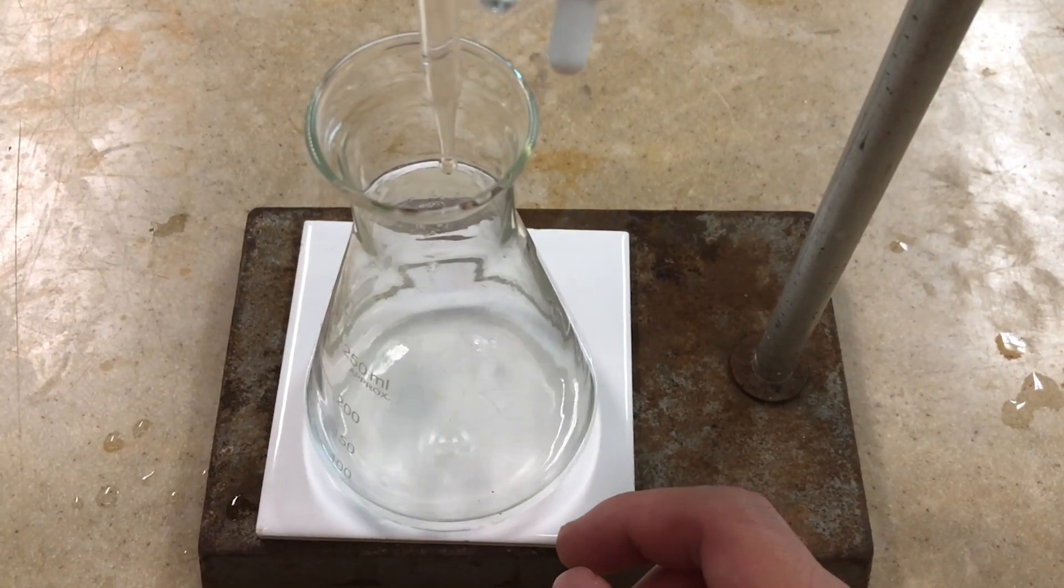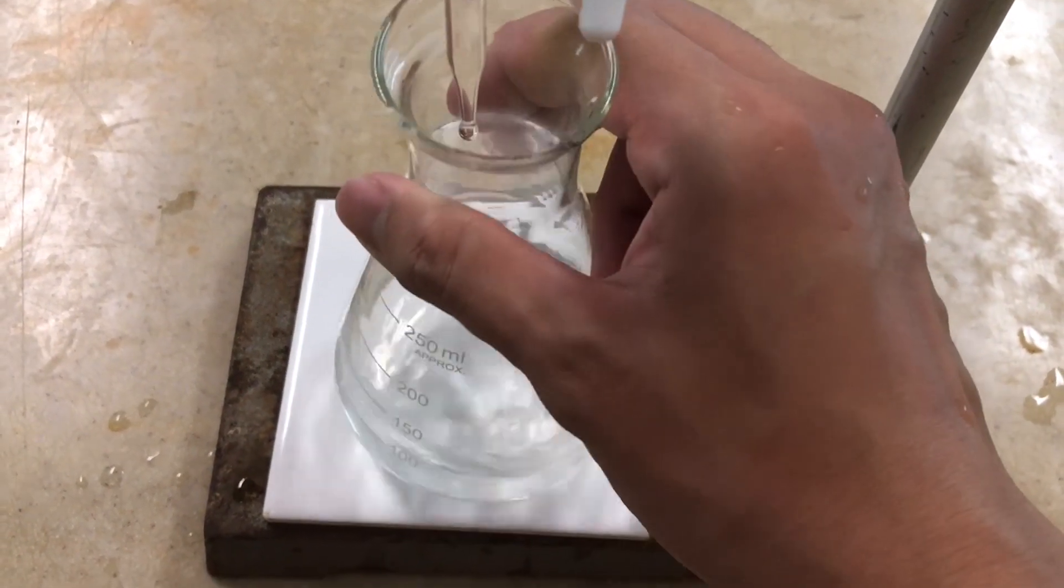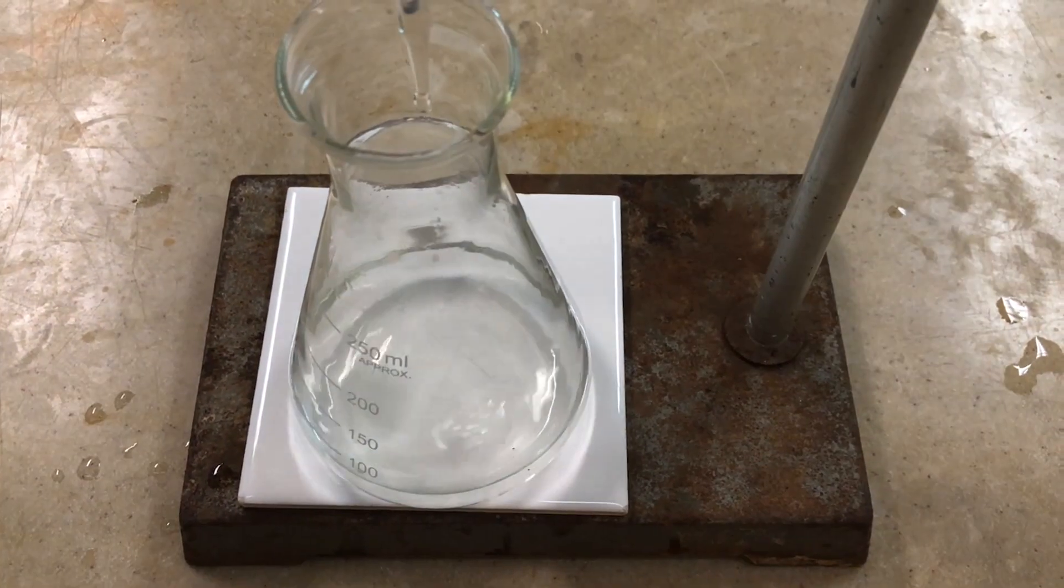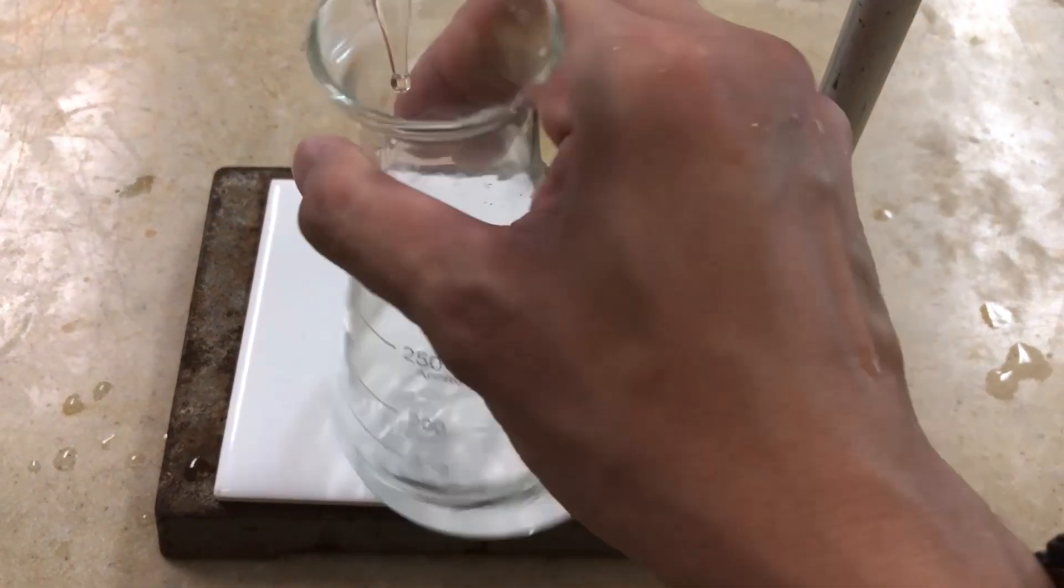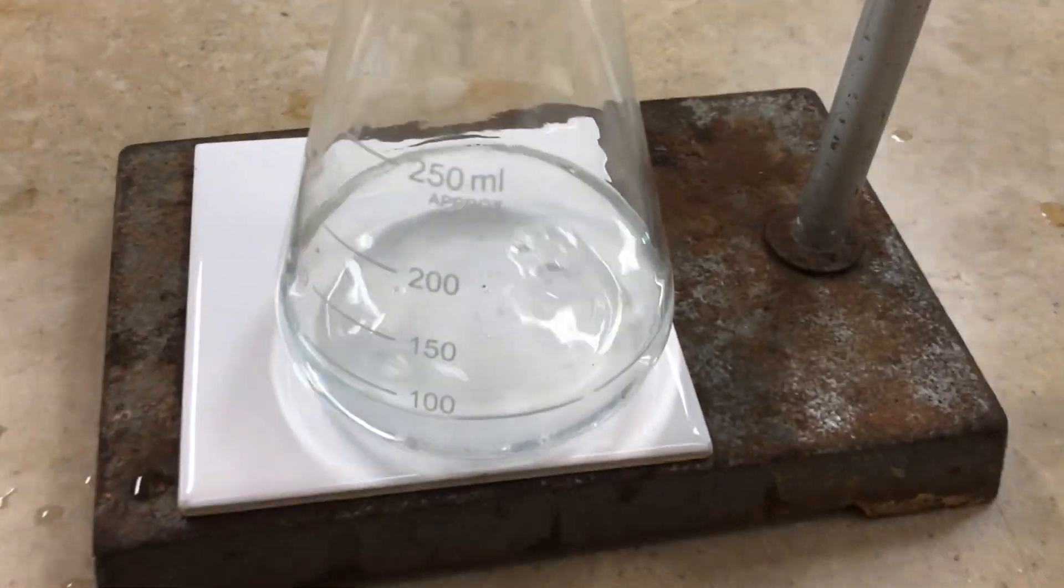As you continue with your titration, you start to realize that there might be a color change that seems to appear, but once you swirl it, it will start to disappear. This means that we are very close to the end point. At this point in time, you should be adding in dropwise.